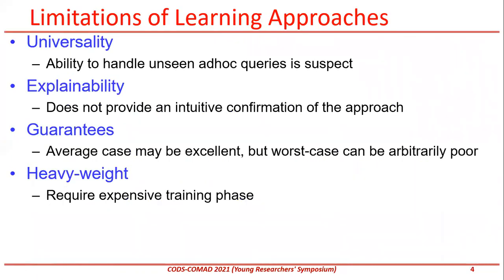Despite these learning approaches providing very promising results for cardinality and cost estimation, they do suffer from several limitations. With regard to universality, the handling of unseen queries is a concern. There is also the issue of explainability — how do you provide an intuitive explanation for the approach. Additionally, they lack guarantees: the average case can be good, but the worst case can be arbitrarily poor, and there may be outliers where the q-error is arbitrarily large. Also, they are heavyweight in that the training phase requires significant computation and huge amounts of data. Our primary focus is on the top two: universality and explainability.